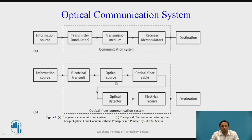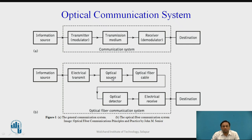These two optical sources are used to transmit data in the form of light. Similar to how a transmission medium is used in a normal communication system, here after the optical source — laser or LED — depending on the application, if you want to transmit data over longer distances, use lasers; for shorter distances, use LEDs. The signal is then given to the optical fiber cable, which acts as a wired transmission medium between transmitter and receiver.